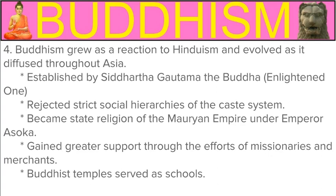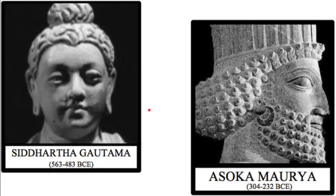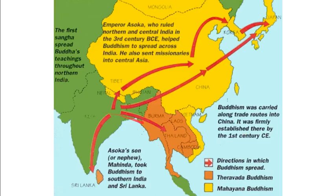Buddhist temples also served as schools. One of the reasons Buddhism became as popular as it did was because of Emperor Ashoka — a Mauryan emperor. The Mauryans were the first dynasty in India and were eventually replaced by the Guptas, the two classical dynasties of India. Ashoka converted to Buddhism and helped popularize and spread the religion throughout India. We can see the spread of Buddhism throughout Southeast Asia and then East Asia — China, Korea, and Japan.